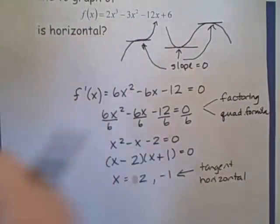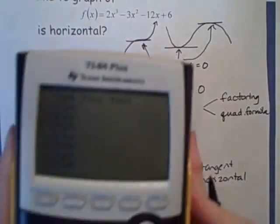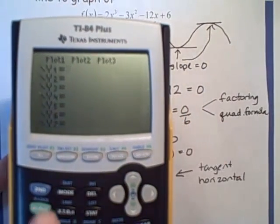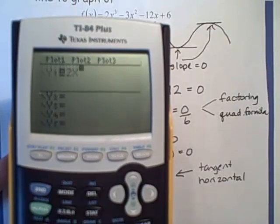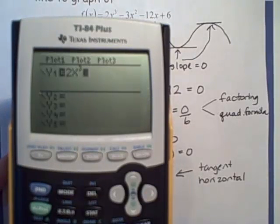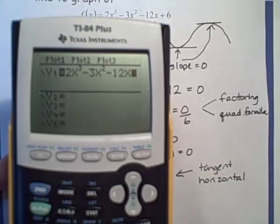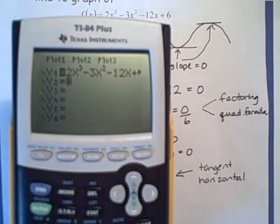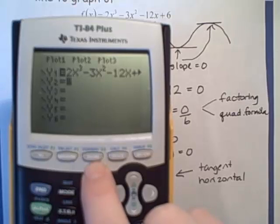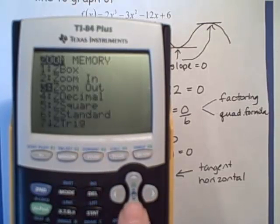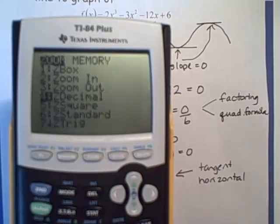So let's just verify this by graphing this thing on our calculator. So I'm going to put my function that I was originally given in for my y1. So I have 2x cubed minus 3x squared minus 12x plus 6. And let's see.